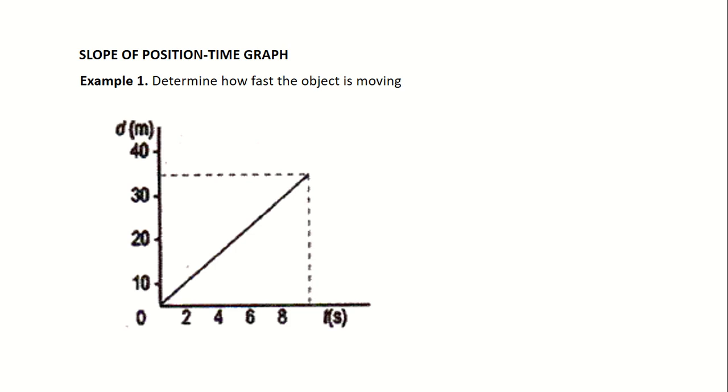Example number one for slope of position time graph. Determine how fast the object is moving. So we are looking for velocity or the speed of the object. First, let's just study the graph. So on the y-axis, I have displacement or position. The unit is meters. And on the x-axis, I have time. The unit is seconds. Now, I see that the object was at zero, the origin during the start. And then it ended here. So the object traveled for, let's say this is 10 seconds. And then it was able to get from a distance of zero hanggang, let's say that's 35.